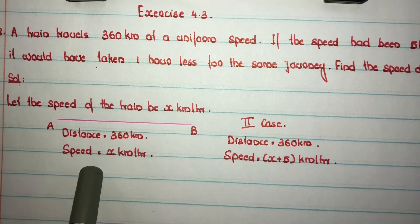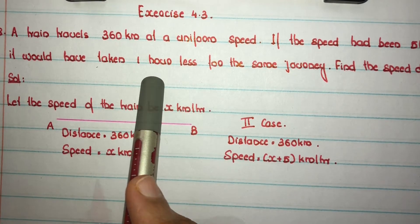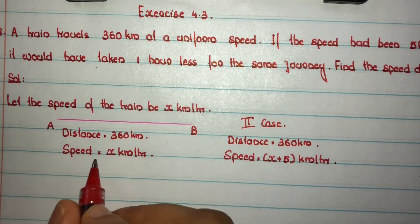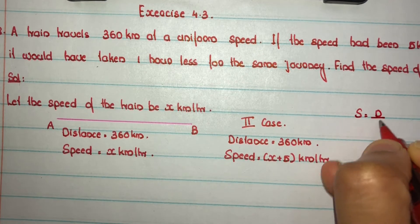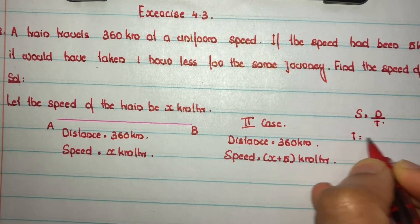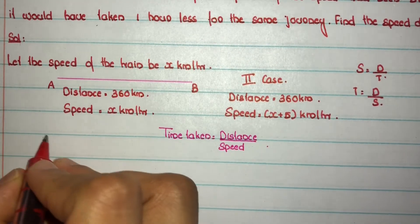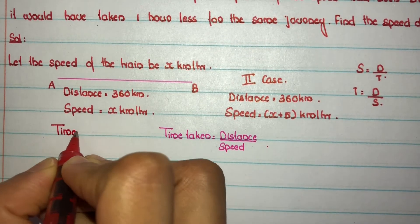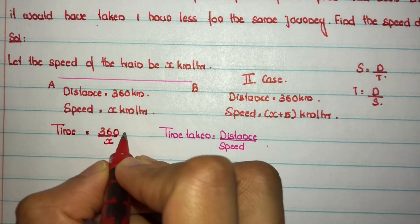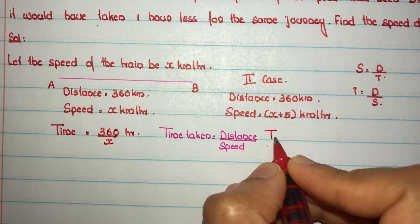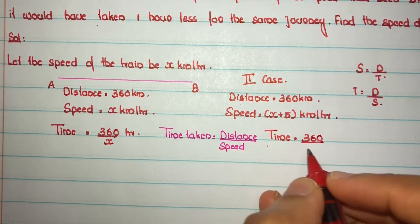We know that speed equals distance divided by time, so time equals distance divided by speed. In the first case, time taken equals distance divided by speed, that is 360 divided by x hours. In the second case, time taken equals distance divided by speed, which is 360 divided by (x plus 5).